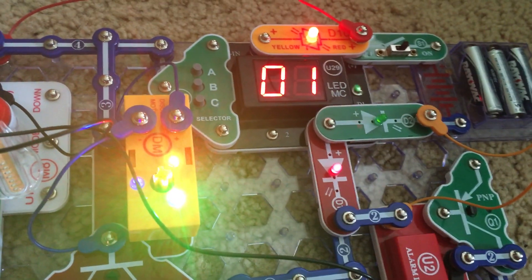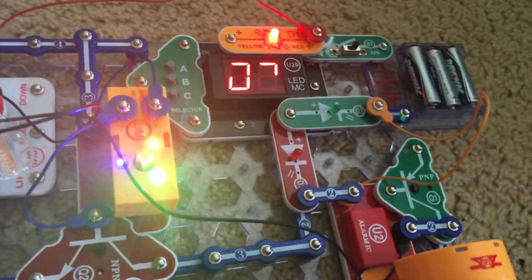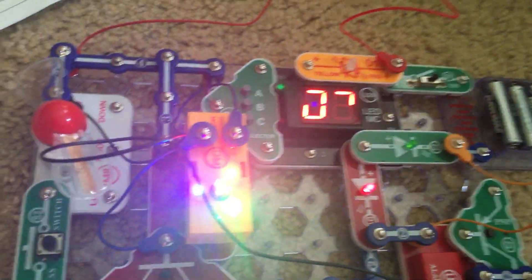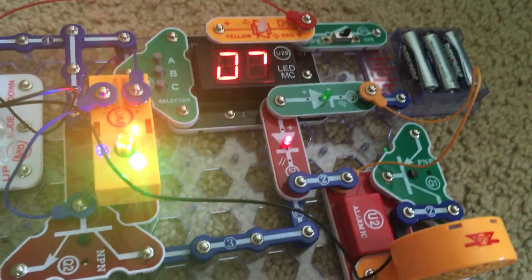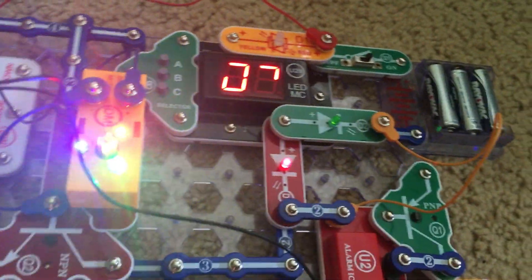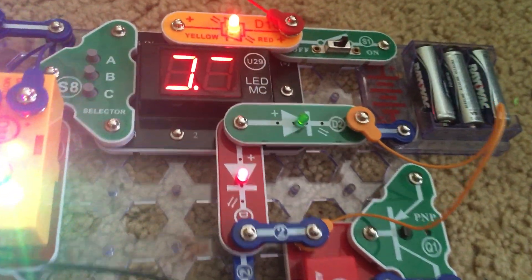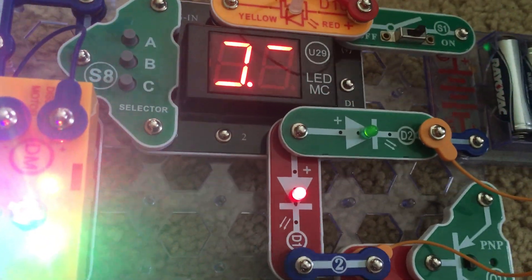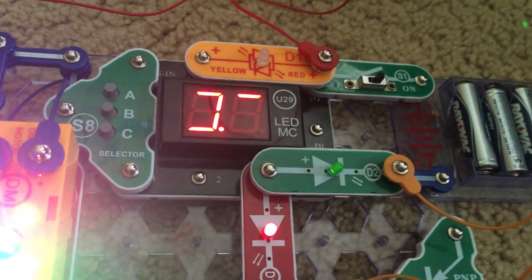But now we will select game one. And now the circuit will perform all different kinds of actions. The LEDs will go on and off, and the display will cycle through different patterns.